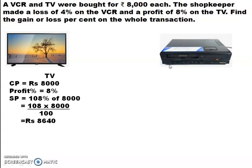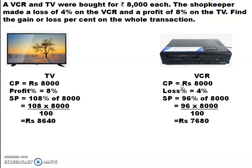Now for the VCR: cost price is the same, Rs. 8000. The shopkeeper sold it at a loss of 4%, so selling price is 96% of cost price. Students, 96 comes from 100 minus 4. So SP = 96/100 × 8000. The selling price of the VCR is Rs. 7680.